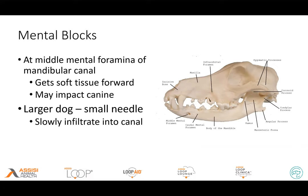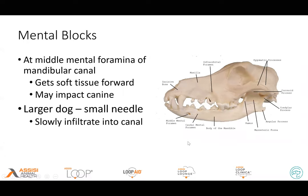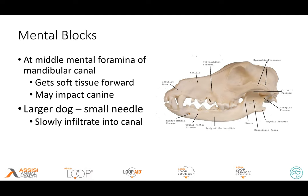The mental block: you're applying your local anesthetic at the middle mental foramen of the mandibular canal, right at the front. If you just apply at this area you'll get soft tissue forward. This block has had pretty large variability in how effective it is, even with good technique. With a larger dog, if I have a small needle and can gently advance into the middle mental foramen — the canine tooth apex is right in that area — I think we'll be able to get some infiltration that can help out, but it's less sure than if you were to do a complete mandibular block.